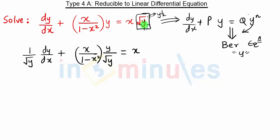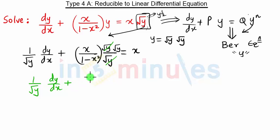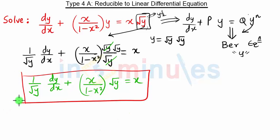Now, y/√y — y is nothing but √y·√y — so one √y cancels, and our equation becomes: (1/√y)·(dy/dx) + x/(1 − x²)·√y = x. If you observe this equation carefully, it matches our standard reducible form.